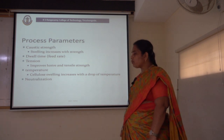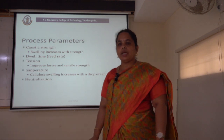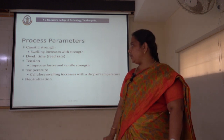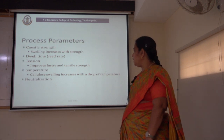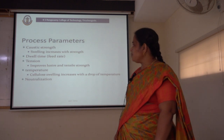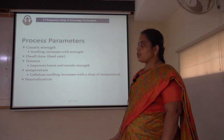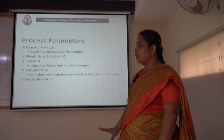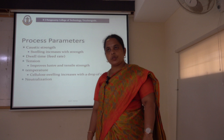Next is tension. We should take care of the warp tension and the web tension to have proper shrinkage control of the textile material. When we have tension, it improves the luster and the tensile strength of the fabric, so the tension should be at a nominal level. Next comes temperature. Cellular swelling increases with a drop in temperature, so temperature is a very important process parameter. And finally, after the mercerization process, the fabric should be neutralized.